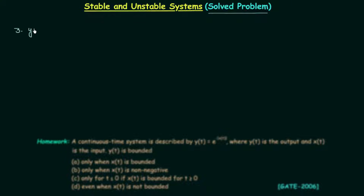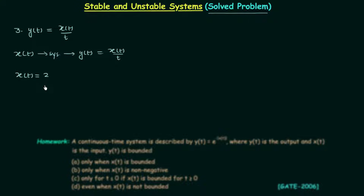The third problem has the relationship y(t) = x(t)/t, and we are required to find out whether the system is stable or unstable. x(t) is the input and y(t) is the output. To solve this problem I will take x(t) = 2, because DC values are bounded in nature. We have taken a bounded signal as our input because we need to satisfy the BIBO criteria.